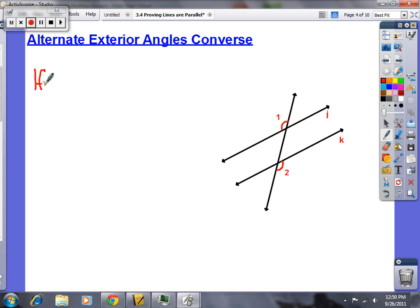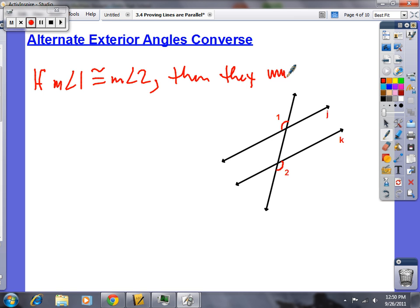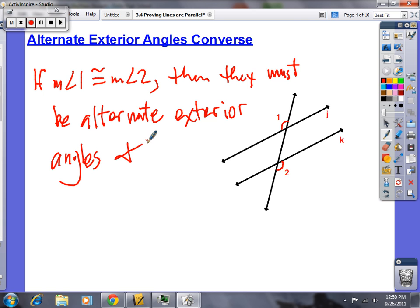So alternate exterior angles. Here we go, you got a picture. So what are we going to write? Alright. If the measure of angle one is congruent to the measure of angle two, comma, then. If the measure of angle one is congruent to the measure of angle two, then they must be alternate exterior angles and J must be parallel to K.